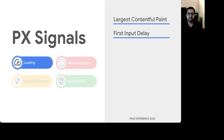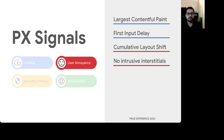For loading, we have Largest Contentful Paint and First Input Delay. LCP is a metric that reports the render time of the largest image or text block visible within the viewport, relative to when the page first started loading. First Input Delay, FID for short, measures the time from when the user first interacts with the page — that is when they click on a link, tap on a button, or use a custom JavaScript-powered control — to the time when the browser is able to process the event handlers in response to that interaction. For the user annoyance pillar, we have Cumulative Layout Shift, CLS for short. CLS measures the sum total of all individual layout shift scores for every unexpected layout shift that occurs on a page. A layout shift occurs when, at any time, a visible element changes its position from one rendered frame to the next.